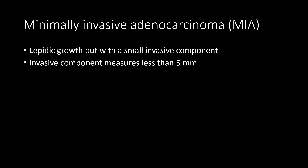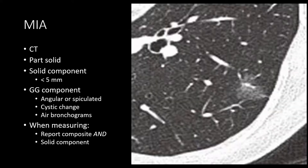Minimally invasive adenocarcinoma also demonstrates lepidic growth, but has a small invasive component measuring less than five millimeters. On CT, it appears part-solid — with a solid component less than five millimeters and the ground glass component up to three centimeters. Additional features of the ground glass component include slightly more angular or spiculated margins, intermixed cystic change known as pseudocavitation, and air bronchograms — differentiating features from pre-invasive lesions.